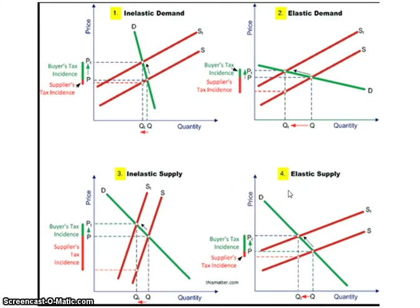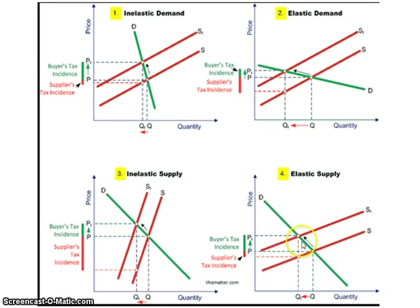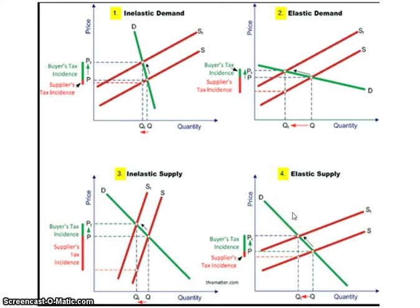With the elastic supply curve, producers have had a lot of time and are able to respond to the change in price, so quantity changes more than price. The price goes up, and because producers can be responsive to that change in price, the burden of the tax gets shifted onto the consumer. The amount to the government is the whole square — the smaller portion goes to the producer and the larger amount goes to the consumer. You also have a larger deadweight loss because there is more elasticity.